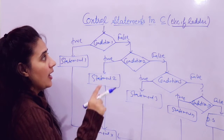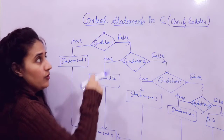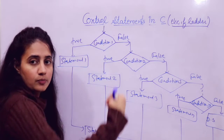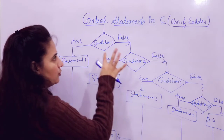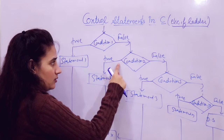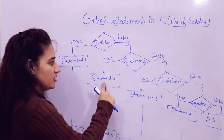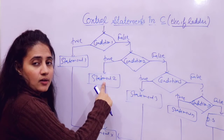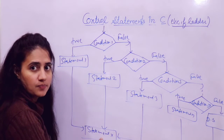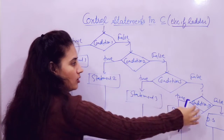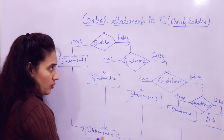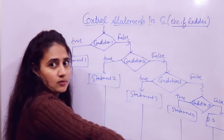The condition is always checked from top to bottom — first condition, then second, then third, up to N. As soon as a true condition is found, the statement associated with that true block is executed. After that, the control directly goes to statement X, skipping all the other conditions. If condition two is true, statement two is executed and control goes there — the remaining conditions would not be checked.